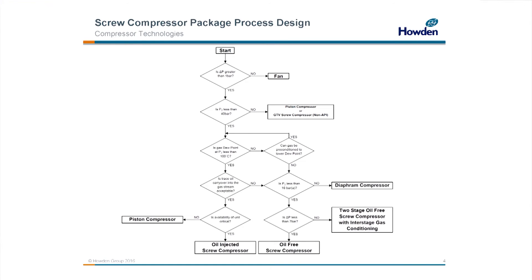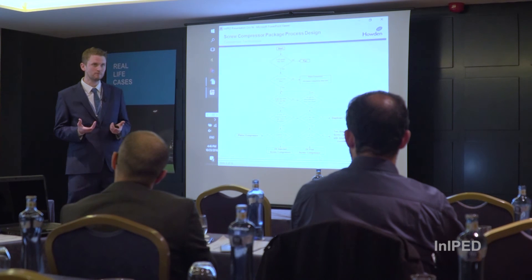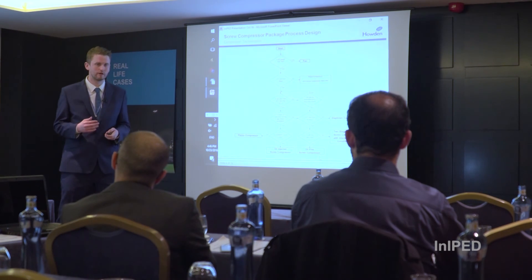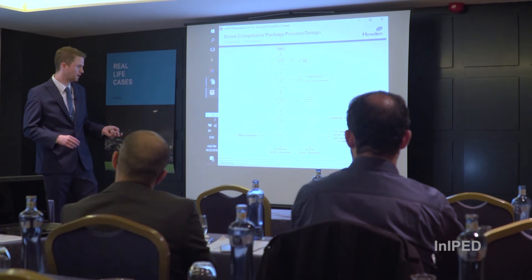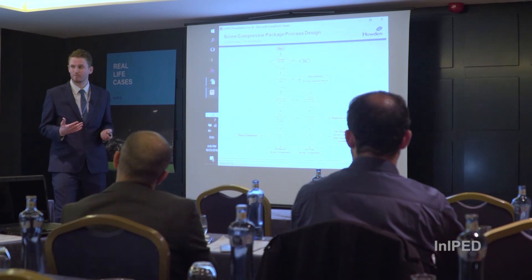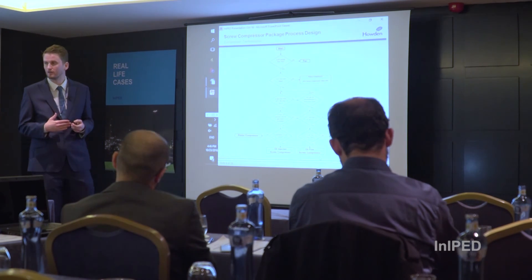A lot of the applications we work on, we work in competition with piston compressors — even Howden also provide piston compressors. But the key benefit of the screw compressor is that because of the rotating movement of the compressor, instead of a forward and backwards motion, you don't get the same wear that you would on a piston compressor. So the availability and reliability of screw compressors is higher than a piston compressor.